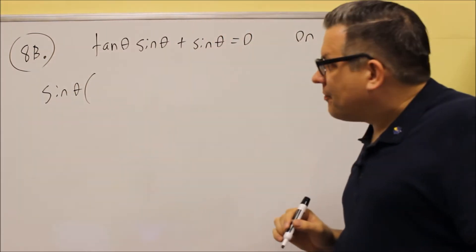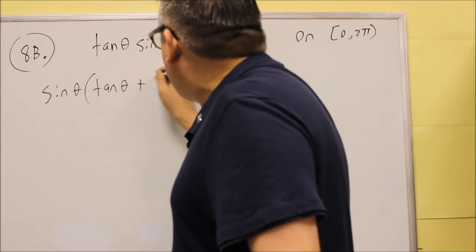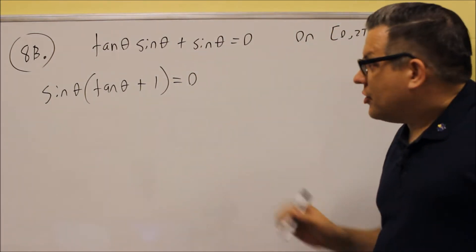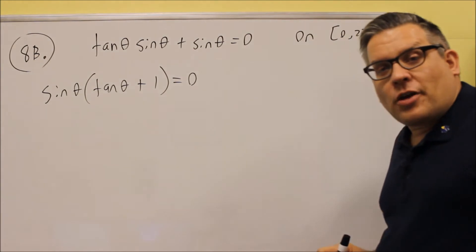So we're going to factor out a sine, and we get tangent theta plus 1, and we're going to set that equal to 0. Okay, so take out the common factor.